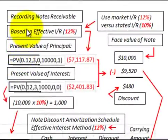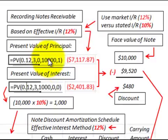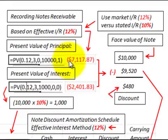Let's look at how we do our calculations. Recording our notes receivable is going to be based on the effective interest rate or the market interest rate of 12%. The first thing we have to do is determine the present value of the principal amount. We take our $10,000 principal and discount it back over three years at 12%, the effective interest rate, at the beginning of the period. Discounting it back, the present value of that principal amount is $7,117.